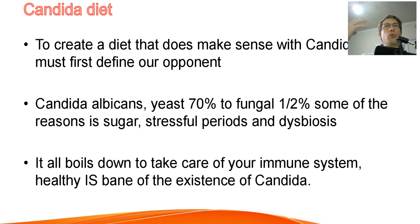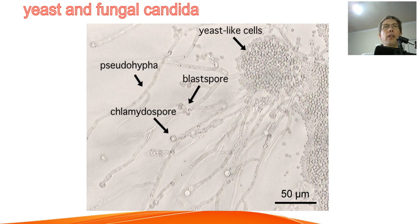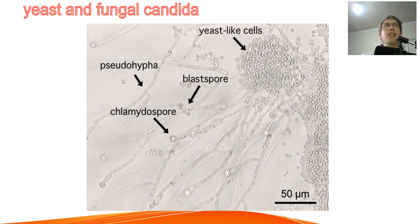The problem is that when candida is able to switch from the yeast form to the fungal form, this is when you start to get problems. On the right of this slide you see yeast-like cells that look like eggs — the form normally present in 70% of the population. On the left you see pseudo-hyphae — long root-like structures called hyphae — this is when candida goes fungal and literally digs holes into your body looking for nutrients, actively damaging your body.